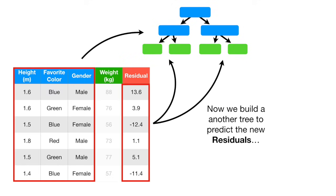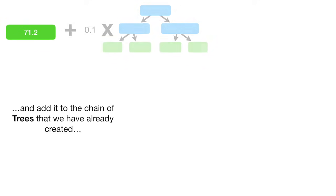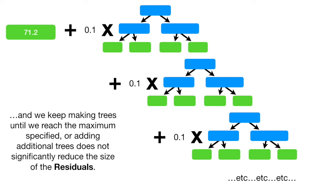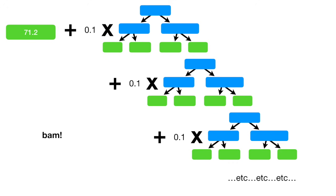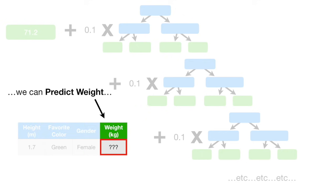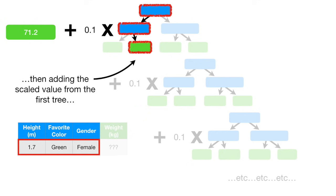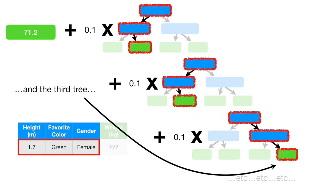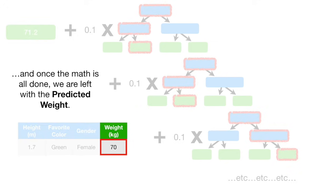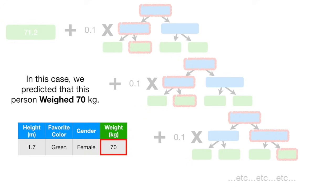Now we build another tree to predict the new residuals and add it to the chain of trees we have already created. We keep making trees until we reach the maximum specified, or until adding additional trees does not significantly reduce the size of the residuals. Then, when we get some new measurements, we can predict weight by starting with the initial prediction, then adding the scaled value from the first tree, the second tree, the third tree, and so on. Once the math is all done, we are left with the predicted weight — in this case, we predicted that this person weighed 70 kilograms.